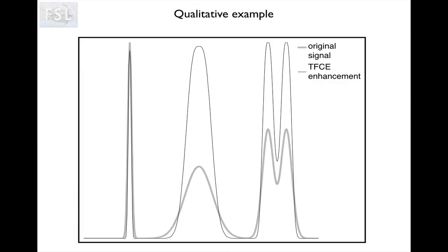I tend to think of this not so much as a clustering method but as a highly non-linear spatial filter. We have a profile with the original signal as the gray line, and we have the threshold-free cluster enhanced signal. Here we have a very sharp peak, meaning this voxel isn't surrounded by a lot of other high t-value voxels, so the enhanced value is pretty much the same — it doesn't actually get any enhancement. Whereas this voxel here is surrounded by many voxels with relatively high statistics, so it gets lots of enhancement.